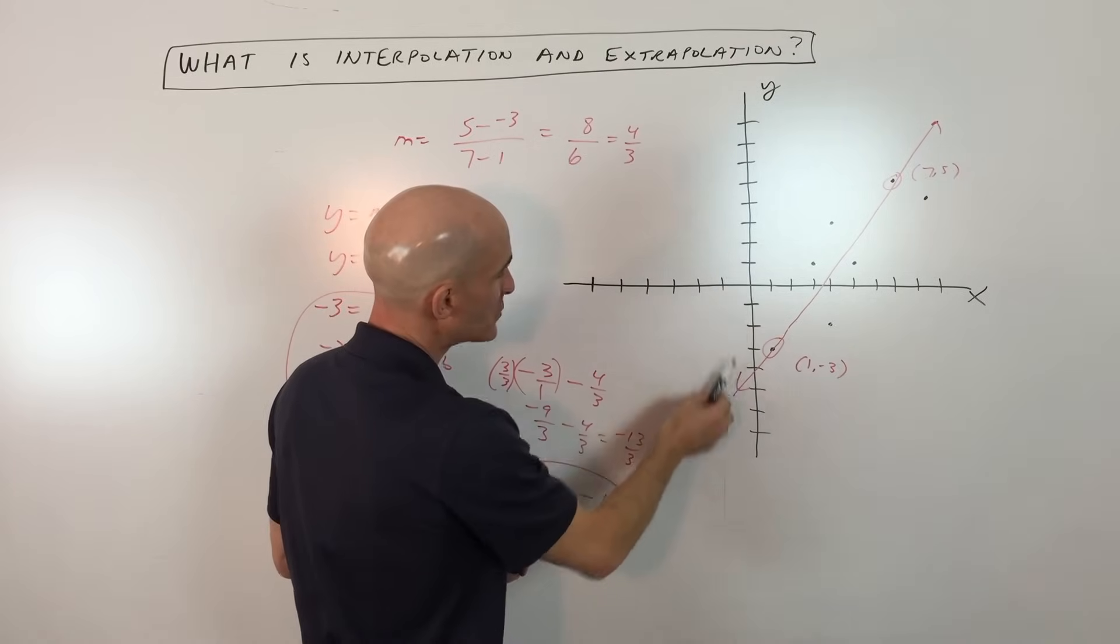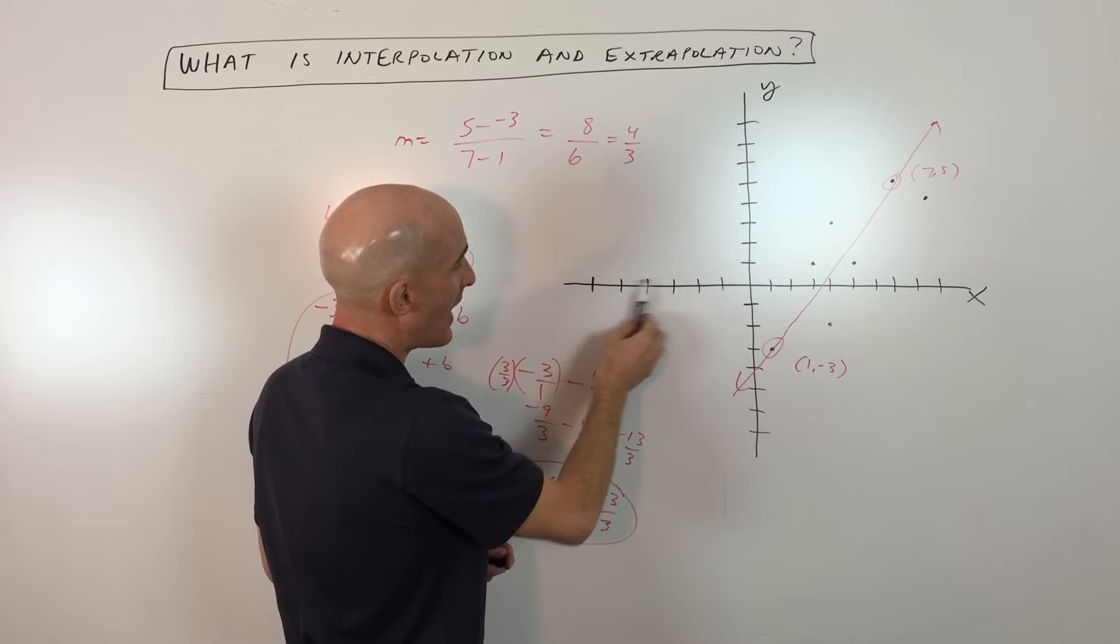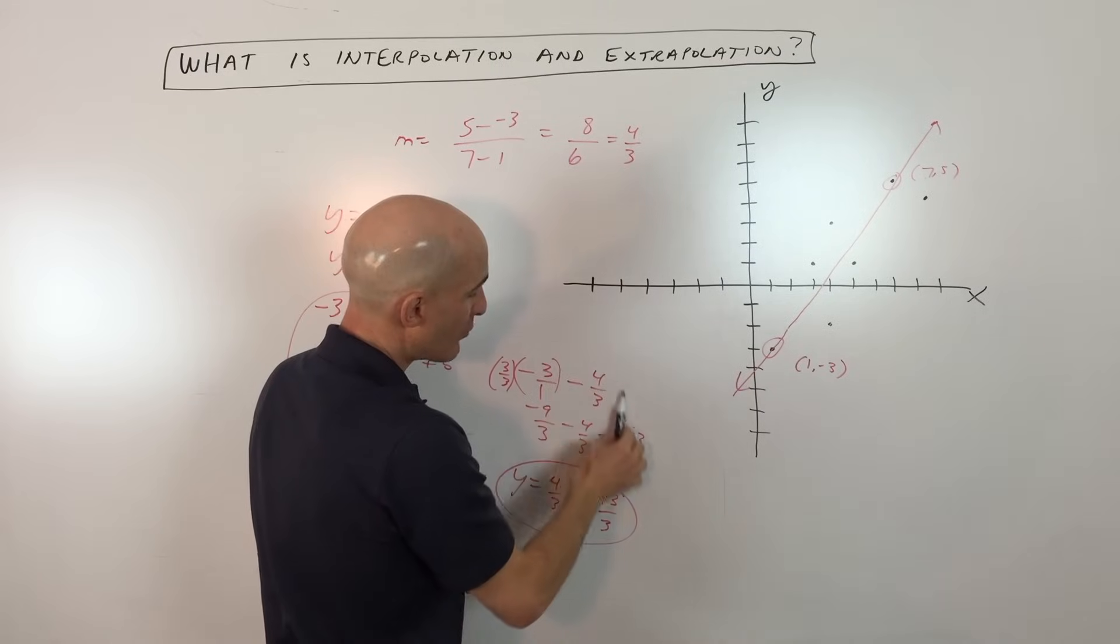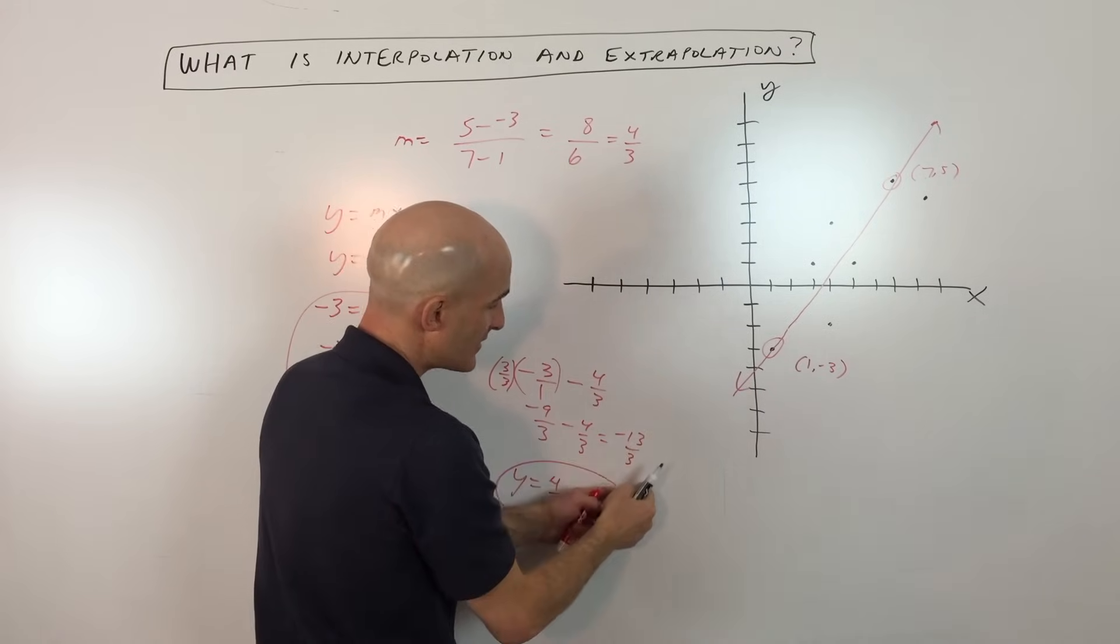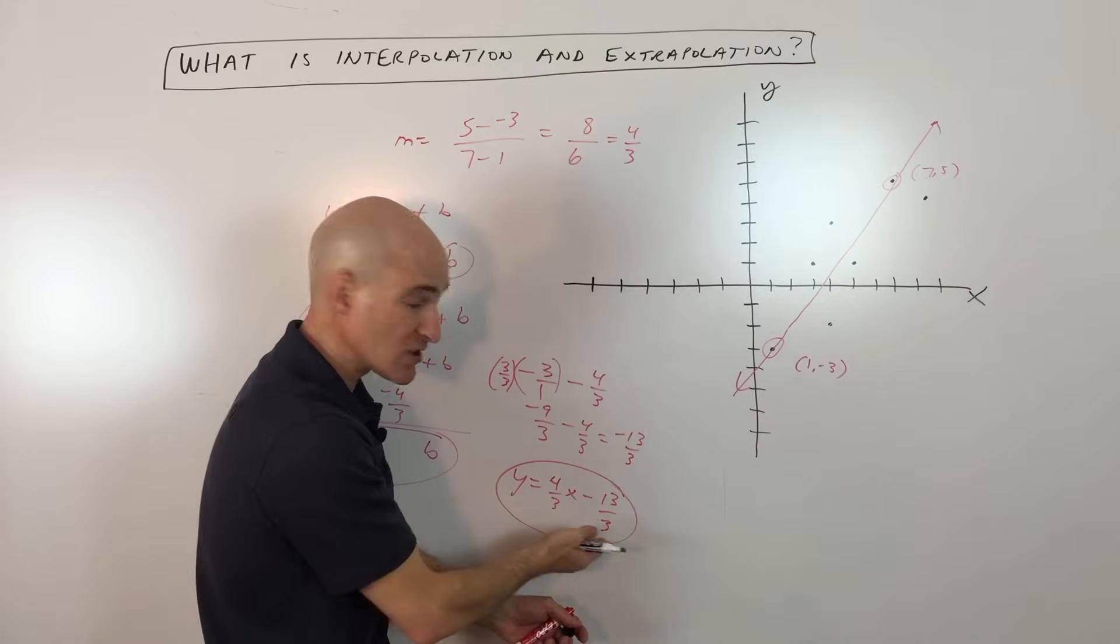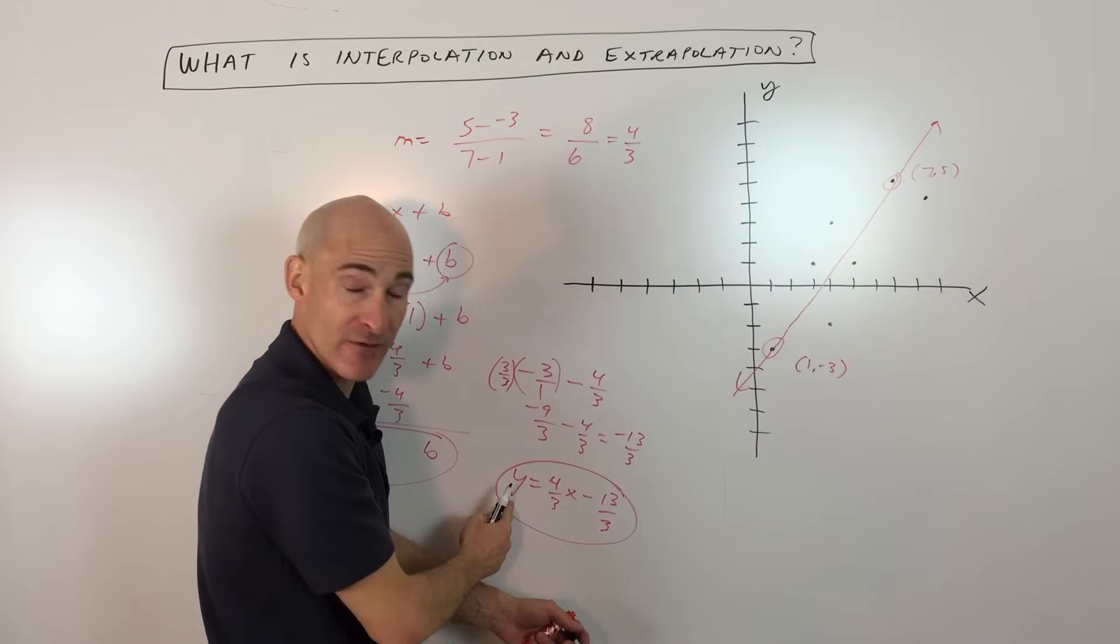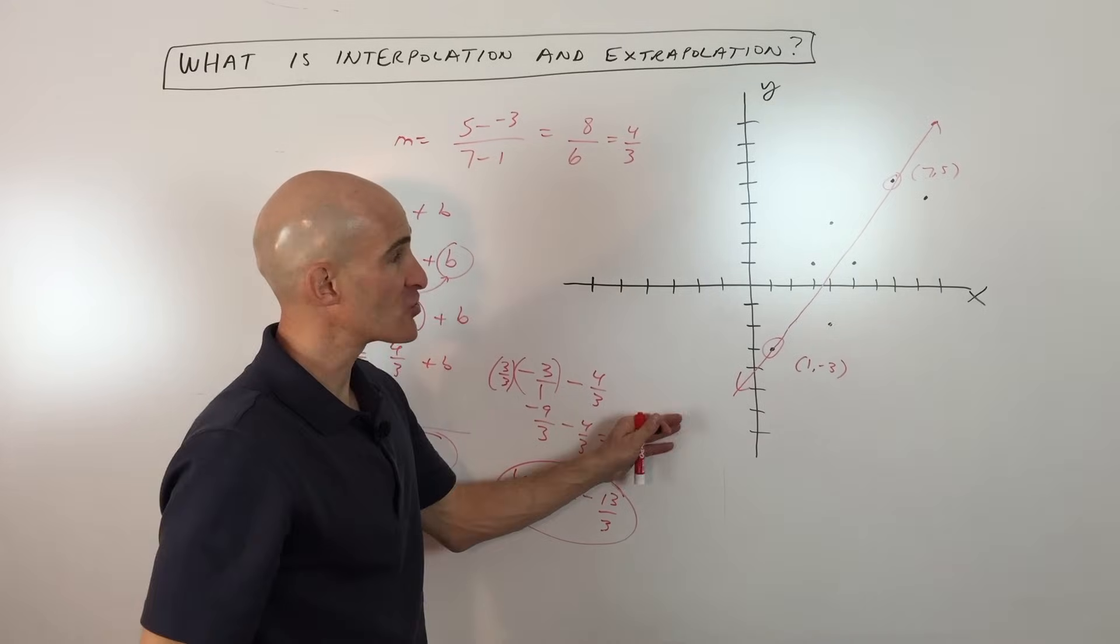So for example, if I wanted to find out what's y when x is like a negative 5 over here? Well, I could approximate, I could go down and say, if I extend this line, it would be somewhere over here. That's the y value. Or I could use the equation and put in that x value and find the y value. That's called extrapolation.